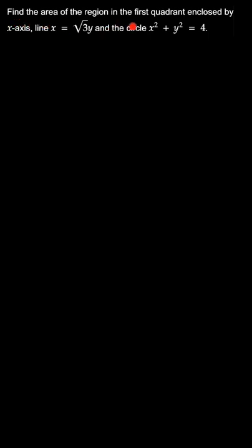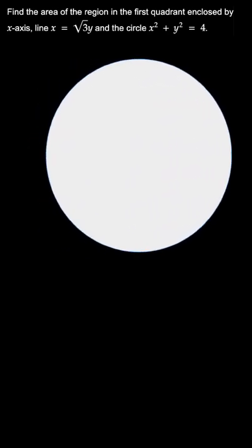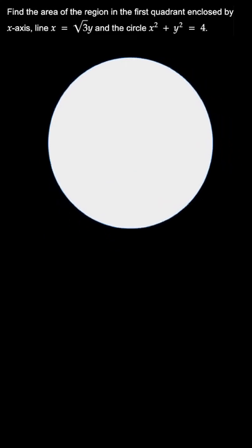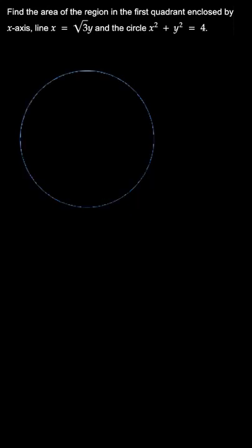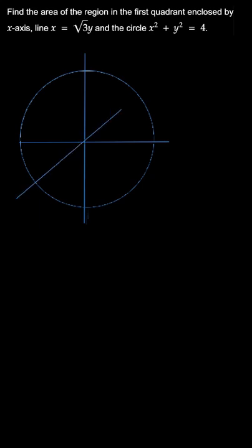Find the area of the region in the first quadrant enclosed by the x-axis, the line x equal to root 3y, and the circle x square plus y square equal to 4, where the radius of the circle is 2, as x square plus y square equals 2 square.